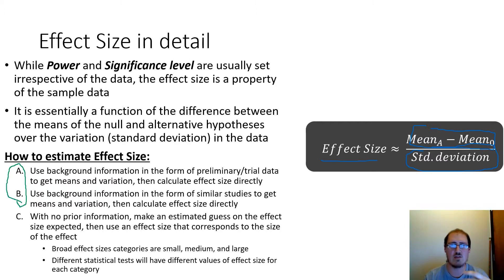A is if you've done preliminary or trial data, and B is if there's a parallel or similar study that is doing the same kind of thing you're doing. You can get information like means, standard deviation, and so forth to calculate an effect size with that background information.